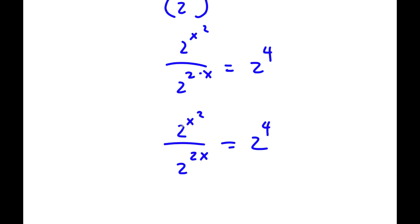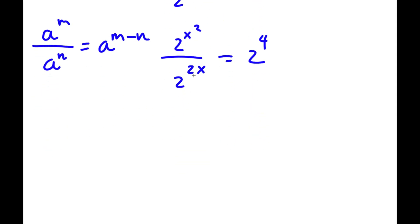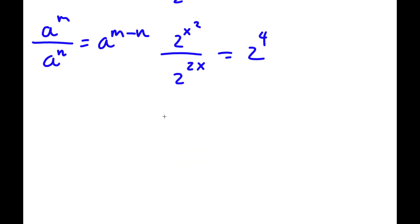And now, as you see, all my bases here are 2, which makes it much easier to solve. If I have something in the form a to the power of m over a to the power of n, this is equal to a to the power of m minus n. So 2^(x²) over 2^(2x) can equal 2 to the power of x squared minus 2x. And this is equal to 2 to the power of 4.